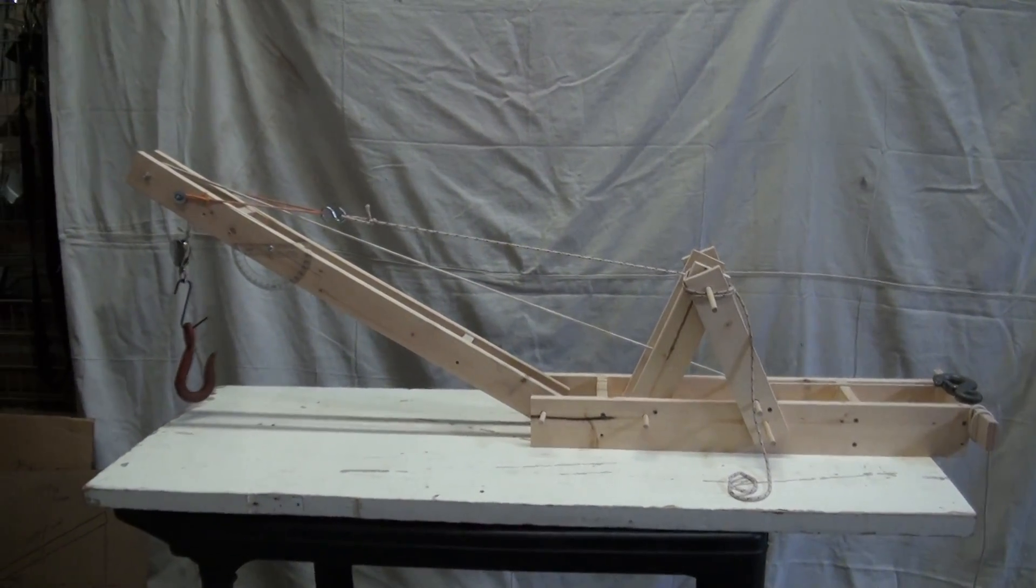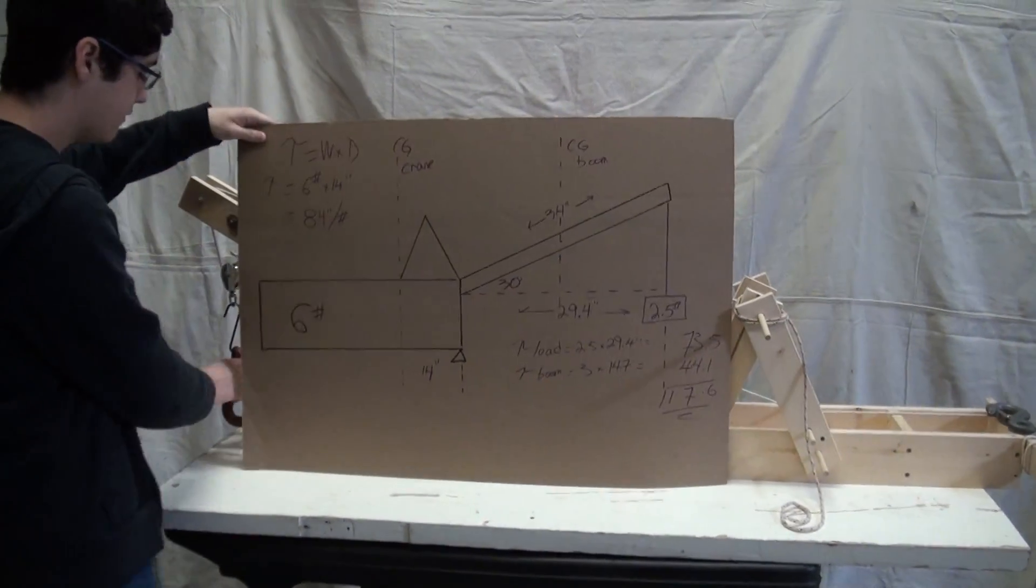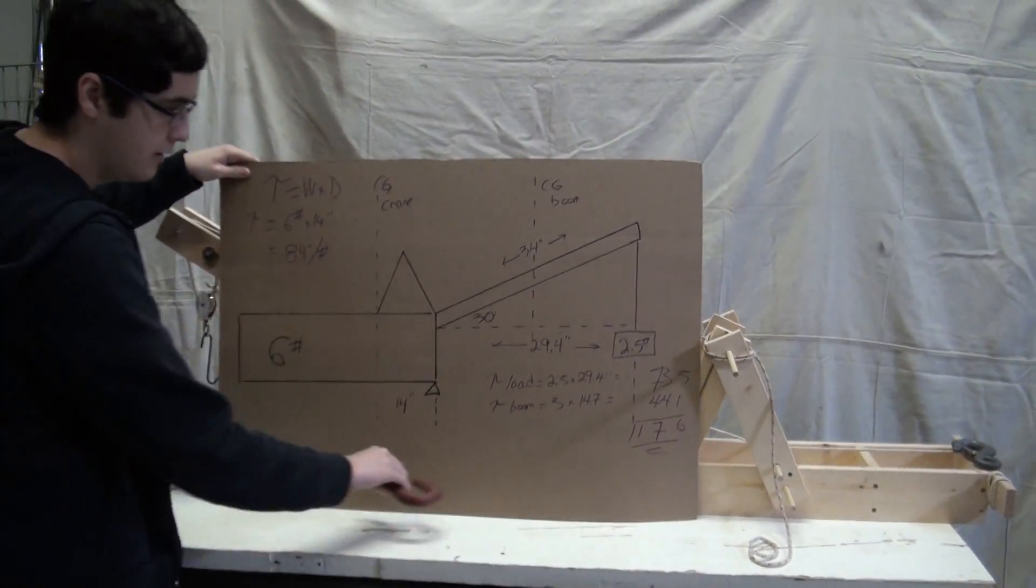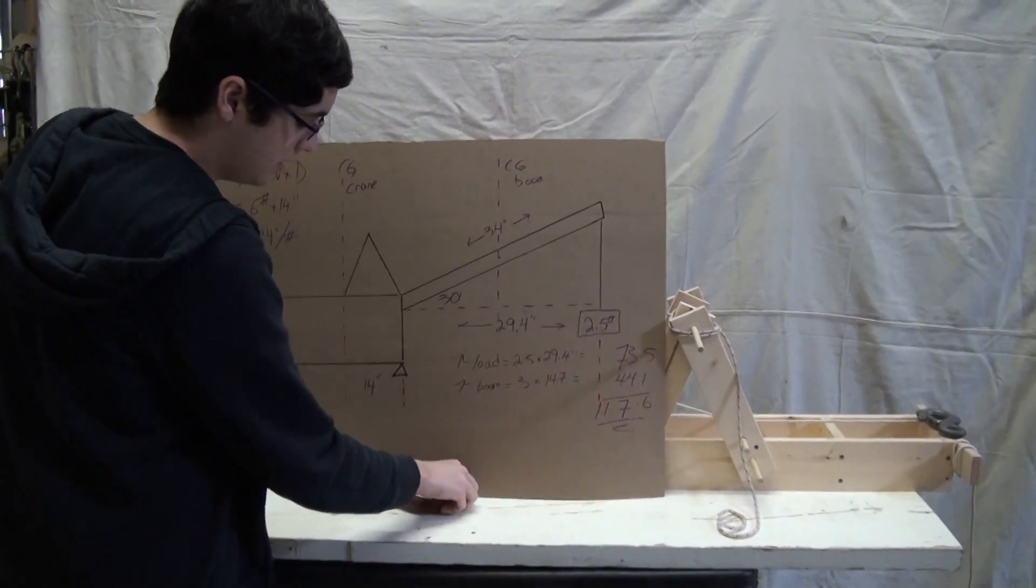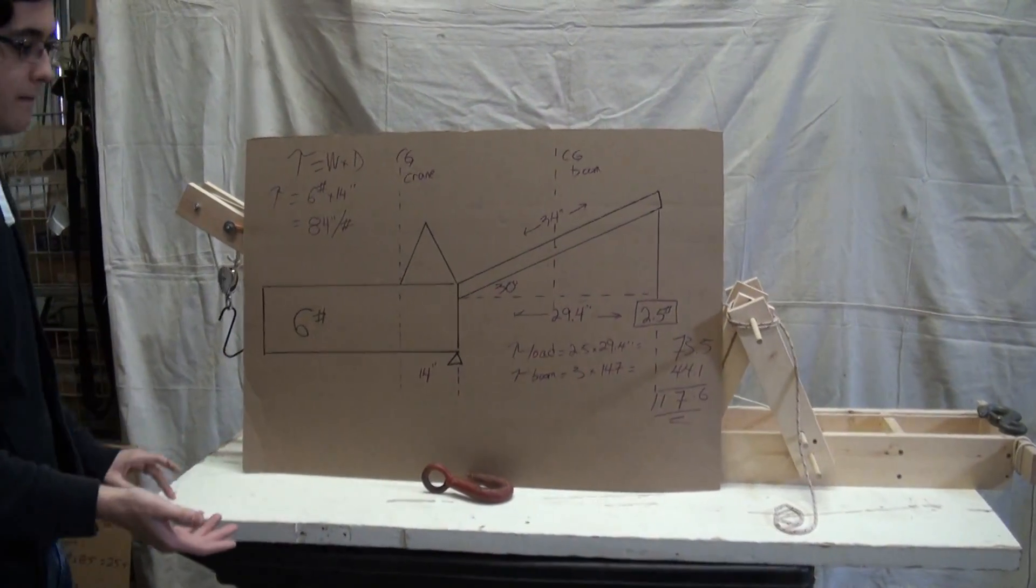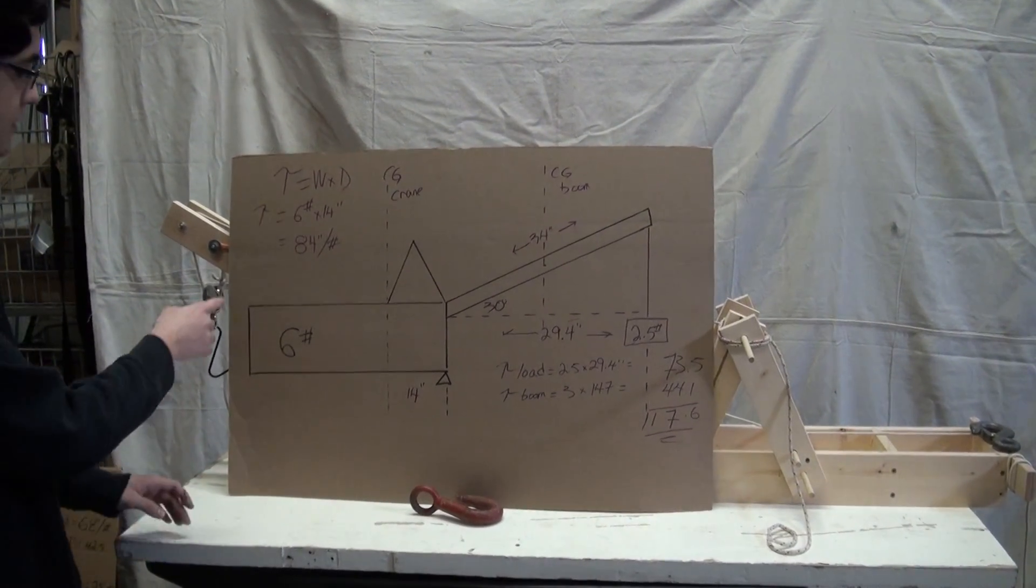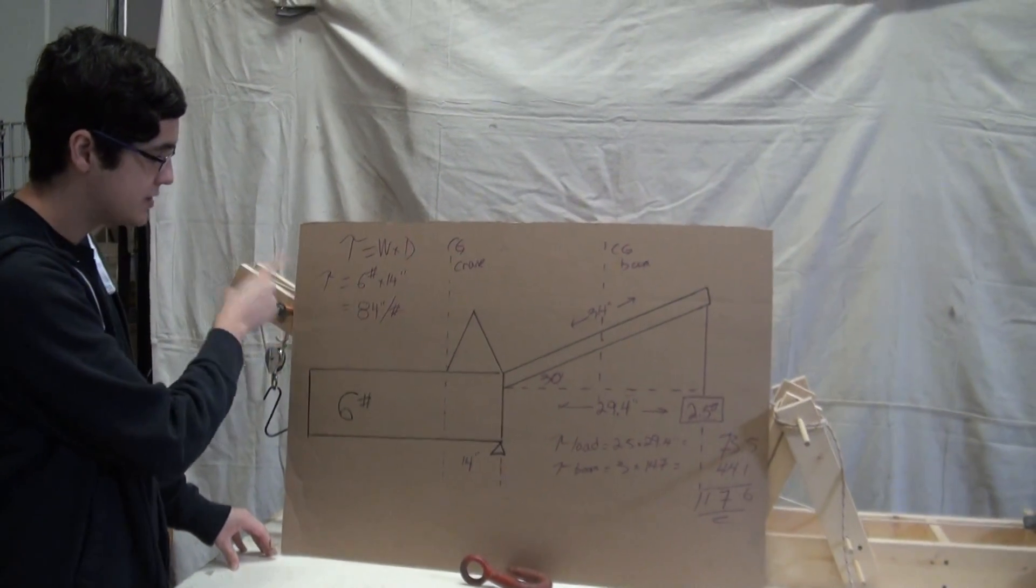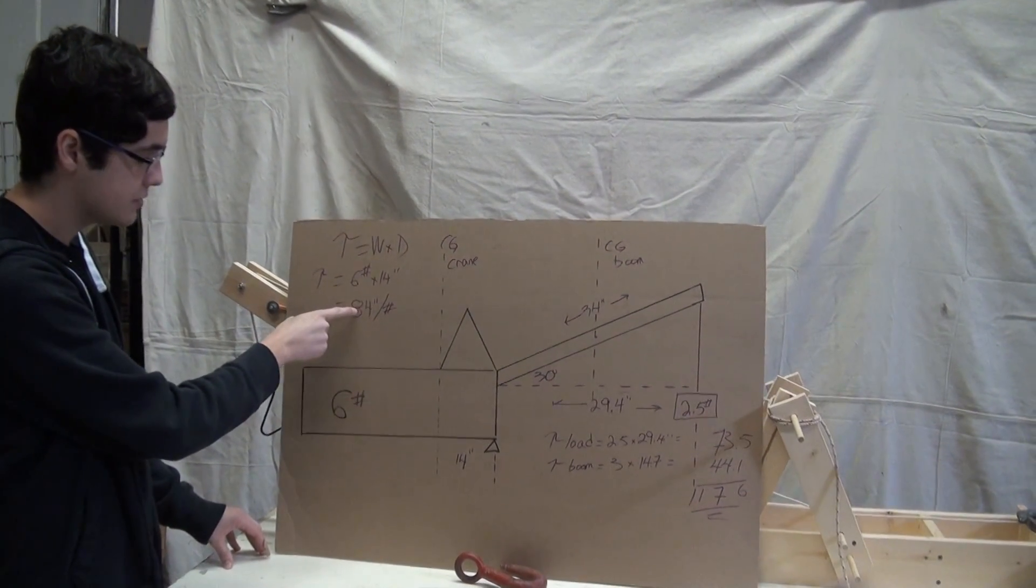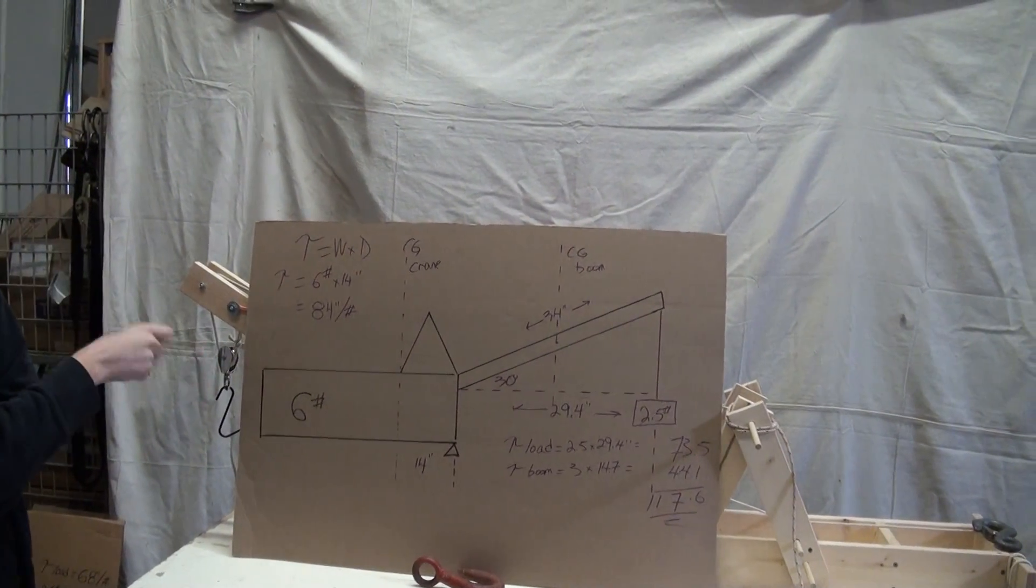So if we want to introduce a safety factor of 1.5, that would mean we'd take our 117 and multiply that by 1.5, which is about 176 inch pounds of torque. So we'll have to match that on the crane body side. 176 minus 84 inch pounds of torque is 92 inch pounds of torque that we need.